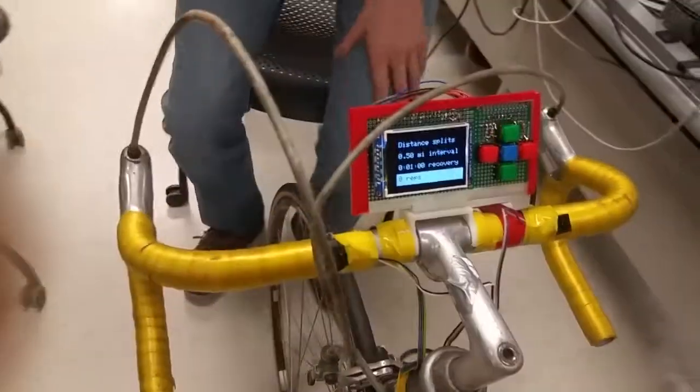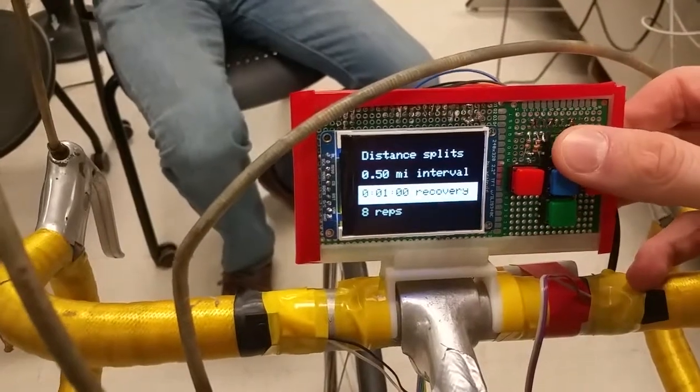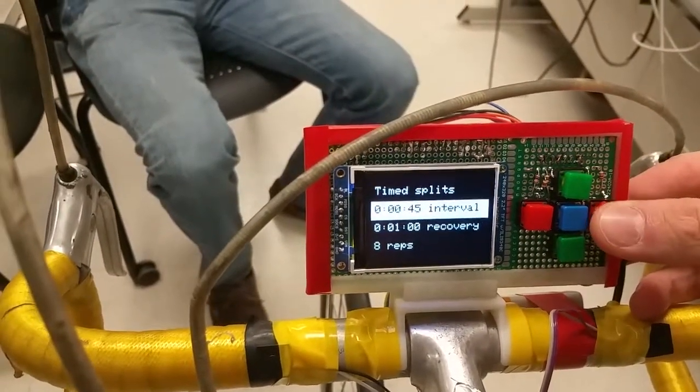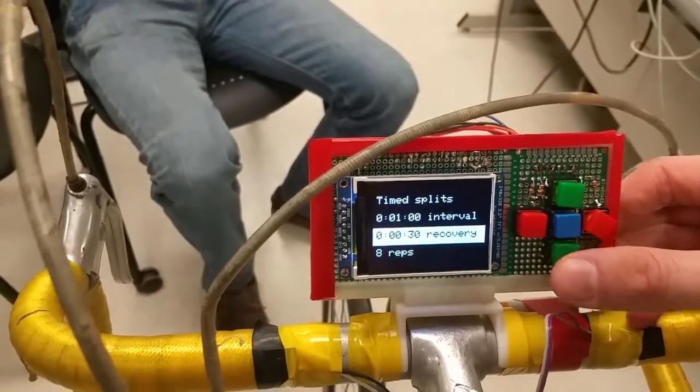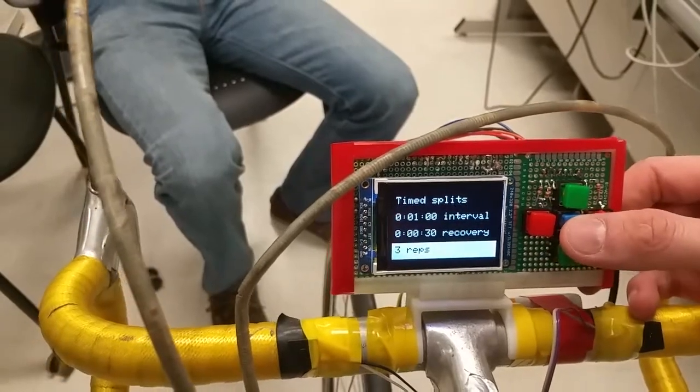And then on the display, what do you have? You're able to customize your workouts. So we can go distance splits or we can go time. So we can say we want to do one minute intervals with 30 seconds in between, and we'll just do that three times.